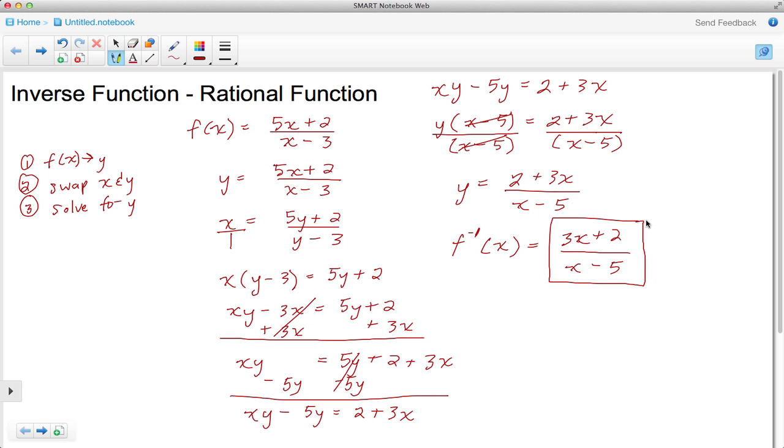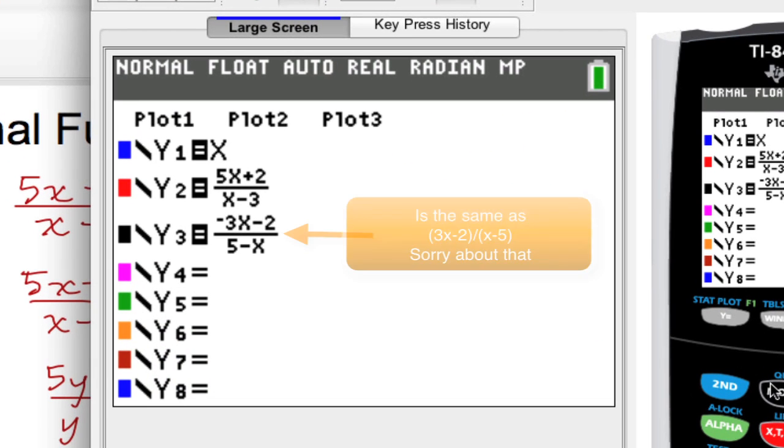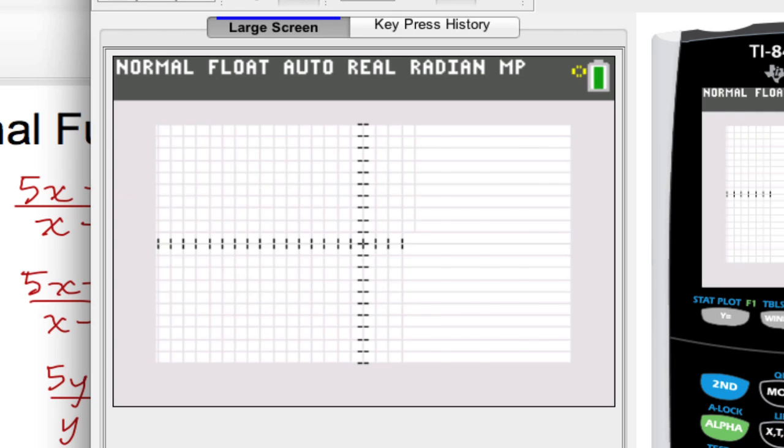With the calculator notice that I have in the first equation position the line of symmetry y equals x in the second position which is the red I've got the original equation and in the third position in black I have the inverse and now let's just click on graph so we can see what this looks like.